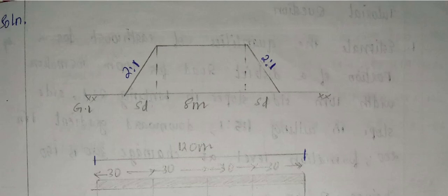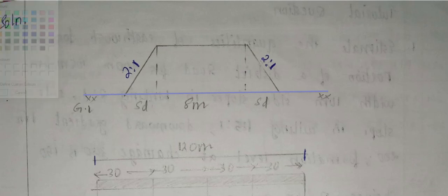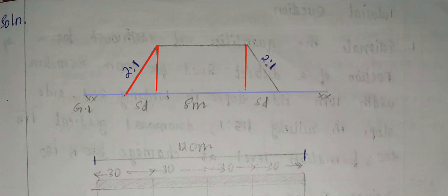In the cross-section of the embankment, the ground level and the height at each 30-meter distance are recorded. The side slopes value is 2:1 ratio — for every 2 units horizontal, there is 1 unit vertical.